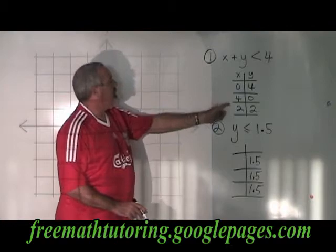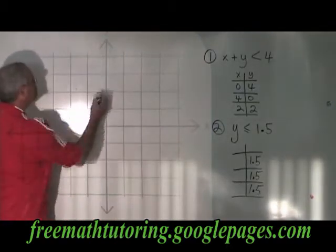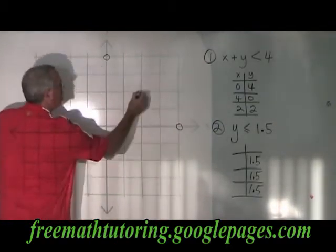I have 0, 4, 4, 0, and 2, 2. 0, 4, 4, 0, 2, 2.